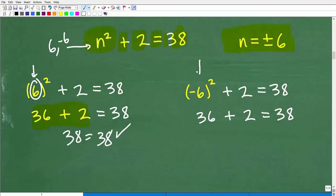All right, let's go ahead and check negative six now. So negative six squared. Guess what? Negative six squared is negative six times negative six, which is a positive 36. So positive 36 plus two is 38. Okay, so again, 38 is equal to 38.